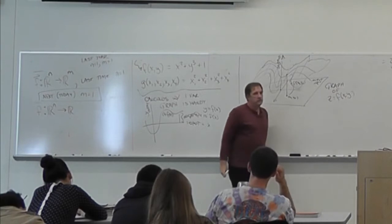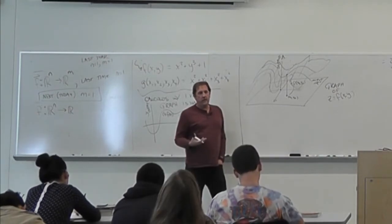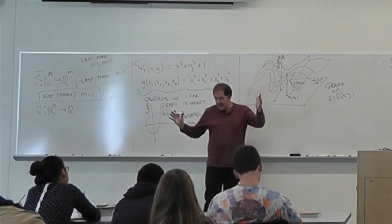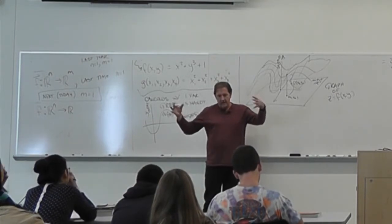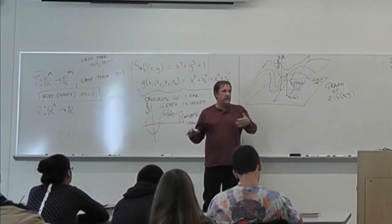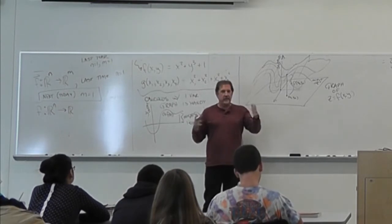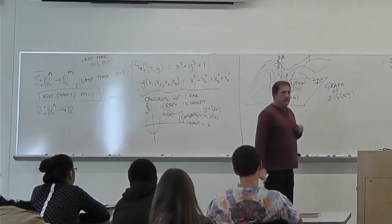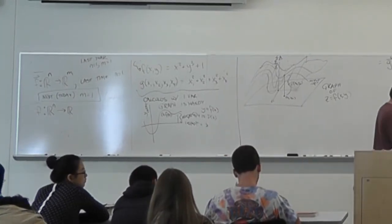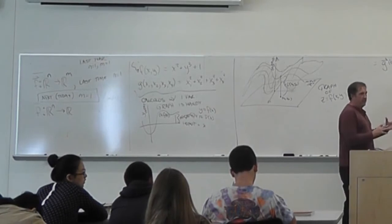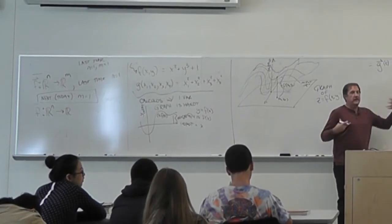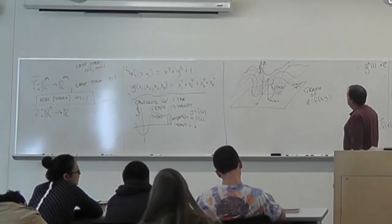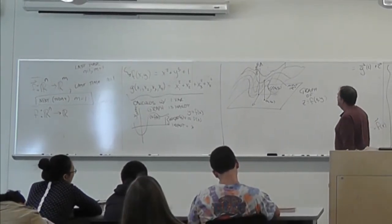This is the graph of the function in two variables. For three input variables, I would take a space and move every point up a certain amount — but 'up' has to be in the fourth dimension, which is a little hard to draw. I can draw some examples; let me get this computer to draw some.